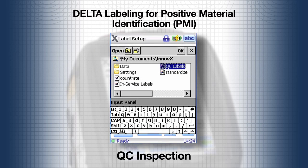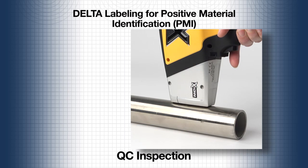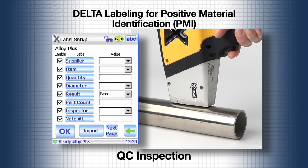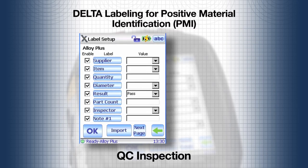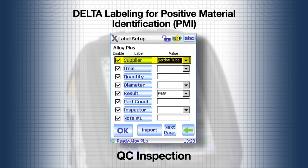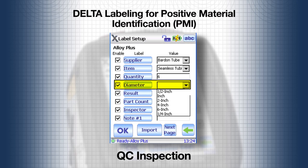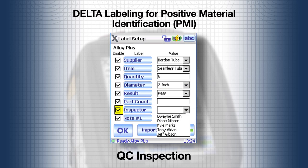The QC labels have already been imported and are ready to use. From the test window, pull the trigger and the label setup window opens. Select all the options needed for this test, including the supplier of the item being tested, the type of item being tested, the number of items being tested, the diameter of the items being tested, and finally, who is performing the testing.